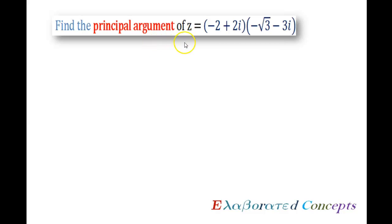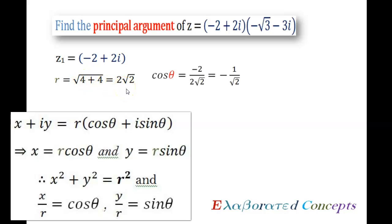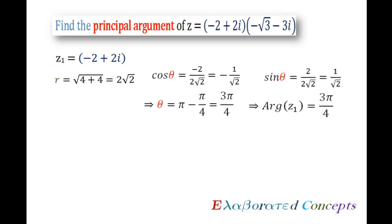Now let's apply these results in solving some problems. To find the principal argument of the product of two complex numbers: let z1 equals minus 2 plus 2i. Its modulus is r equals 2 root 2. Using cos θ equals x upon r and sin θ equals y upon r, we get cos θ equals minus 1 upon root 2 and sin θ equals 1 upon root 2. This means θ lies in the second quadrant, therefore θ equals 3π by 4. So argument of z1 is 3π by 4, which is also its principal argument.